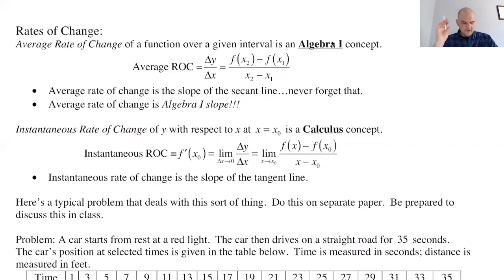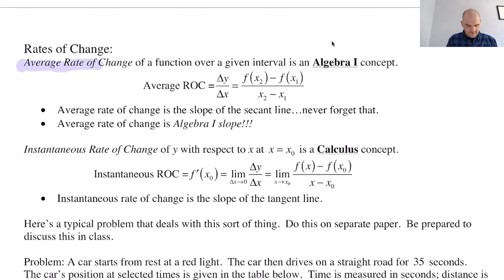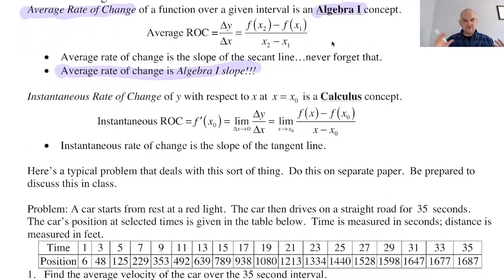We have this concept: average rate of change. Average rate of change is algebra one slope — every time you hear one, think the other. The average rate of change of a function is just the slope between two points: delta y over delta x, or f(x₂) minus f(x₁) over x₂ minus x₁. Average rate of change is the slope of a secant line, and that's actually a surprisingly big deal — it's going to come up a ton even in calculus.